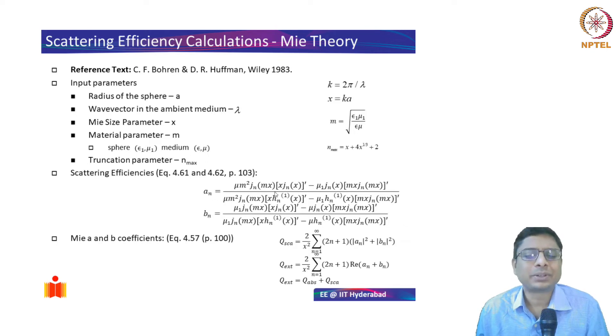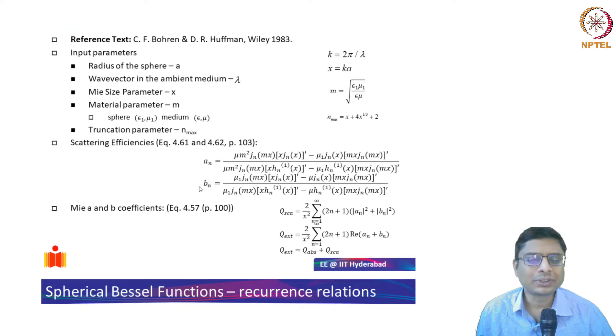There are some expressions which are simple—these are not very complicated. You can implement them. At first it might look tedious, but if you spend a couple of days on this you'll work it out. Once you have these coefficients, you can easily sum up the scattering cross section, extinction cross section, and absorption cross section. The summary of the entire thing is given in this slide.